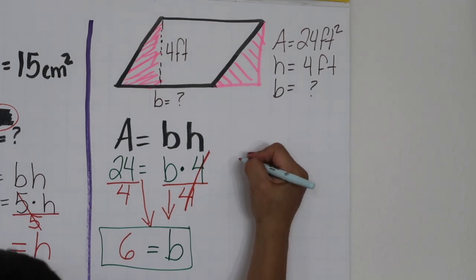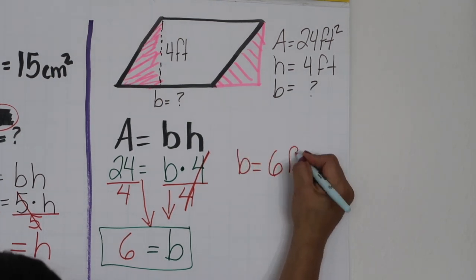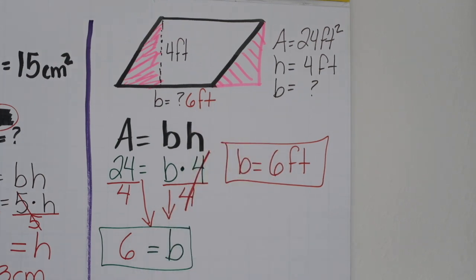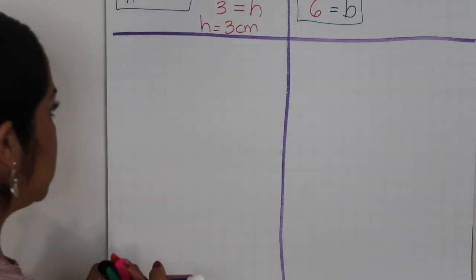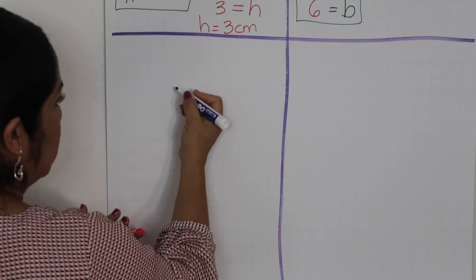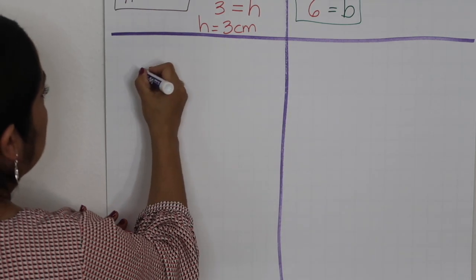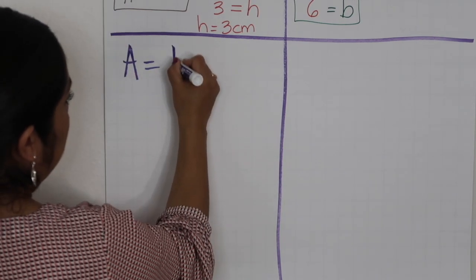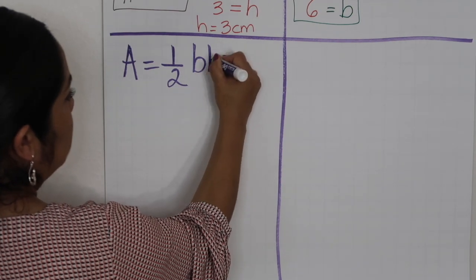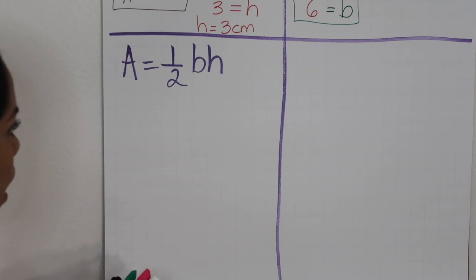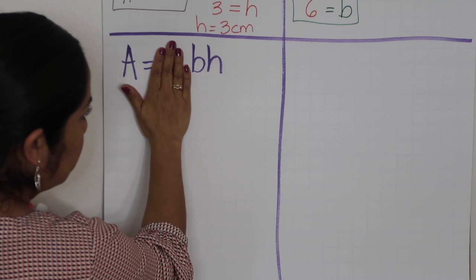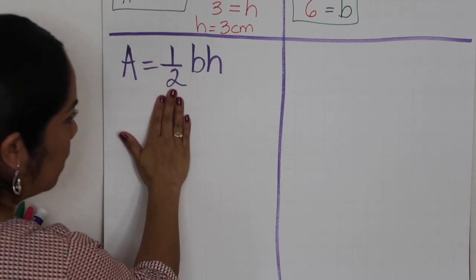We can rewrite it as B equals 6 feet. That's our base. Now I'm going to talk about the area of a triangle. The formula is A equals one half base times the height. The rectangle was just base times height.